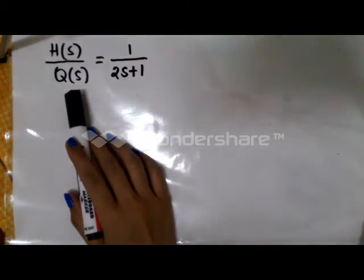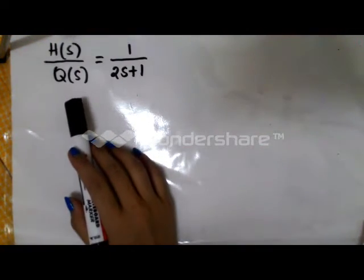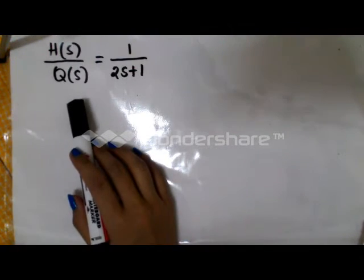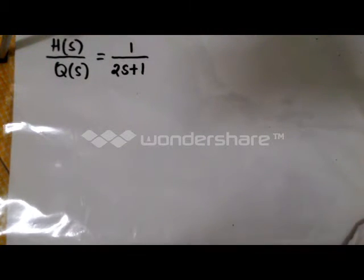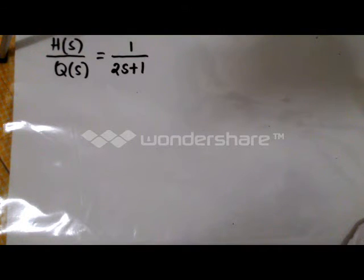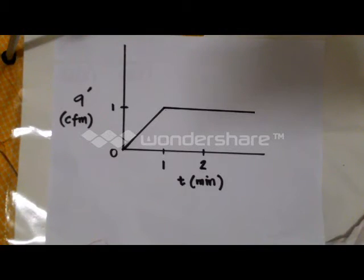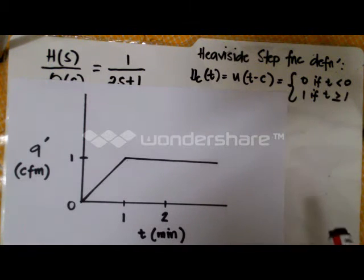The input Q(s) should be expressed as the difference in step functions, obtained based from our illustration. In control system analysis, we are typically more interested in deviation variables. It is common practice to rewrite systems in terms of deviation variables. Using this, we can now apply the Heaviside step function definition. Using the definition of a Heaviside step function, we can now write Q(t) in terms of u(t).